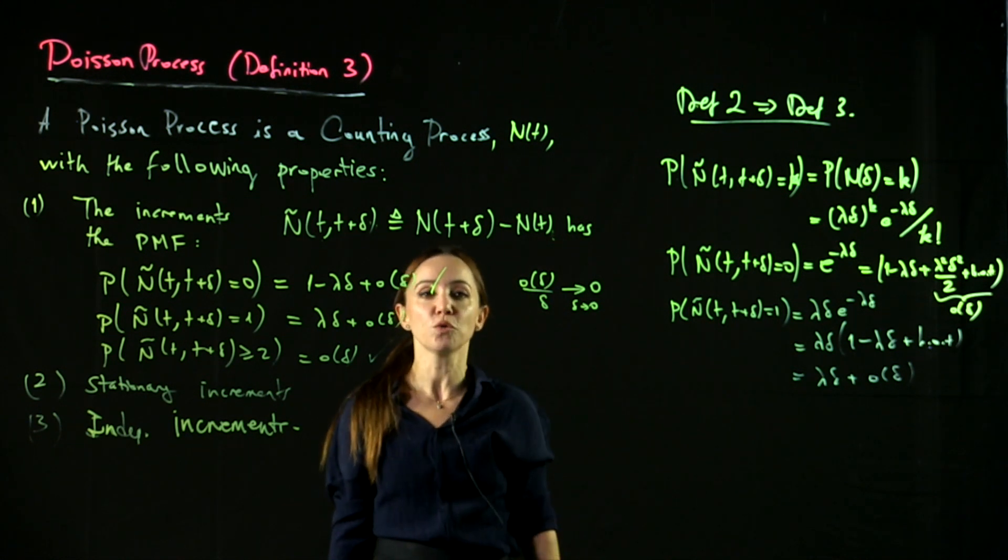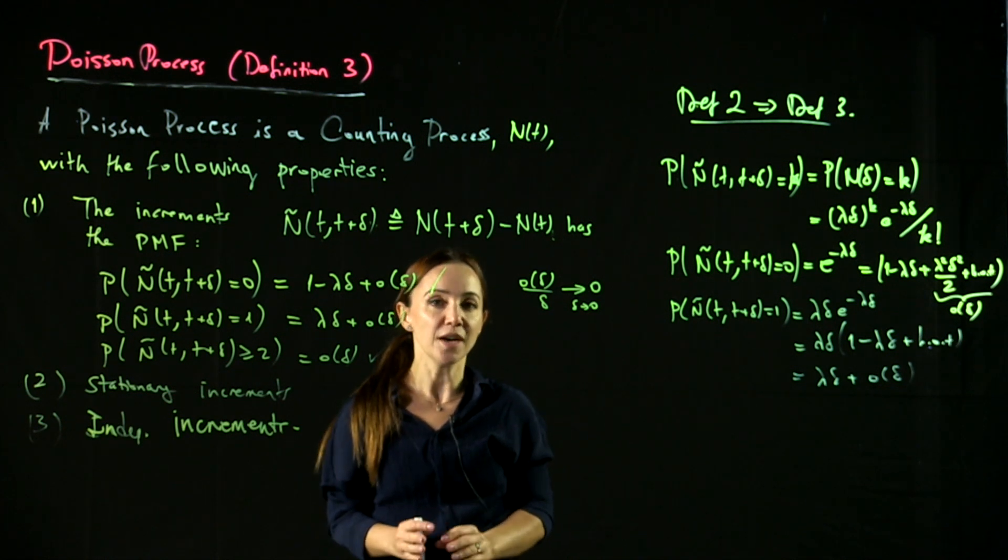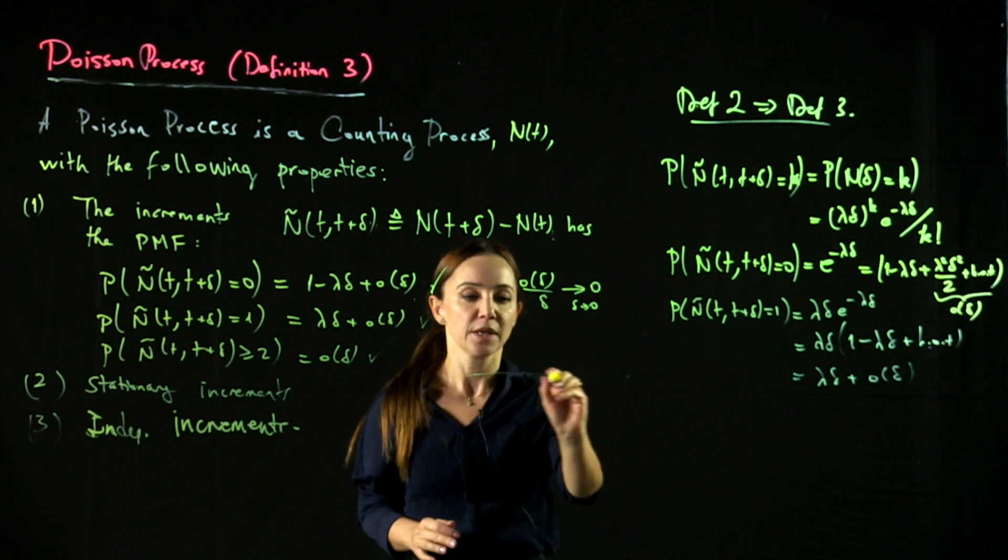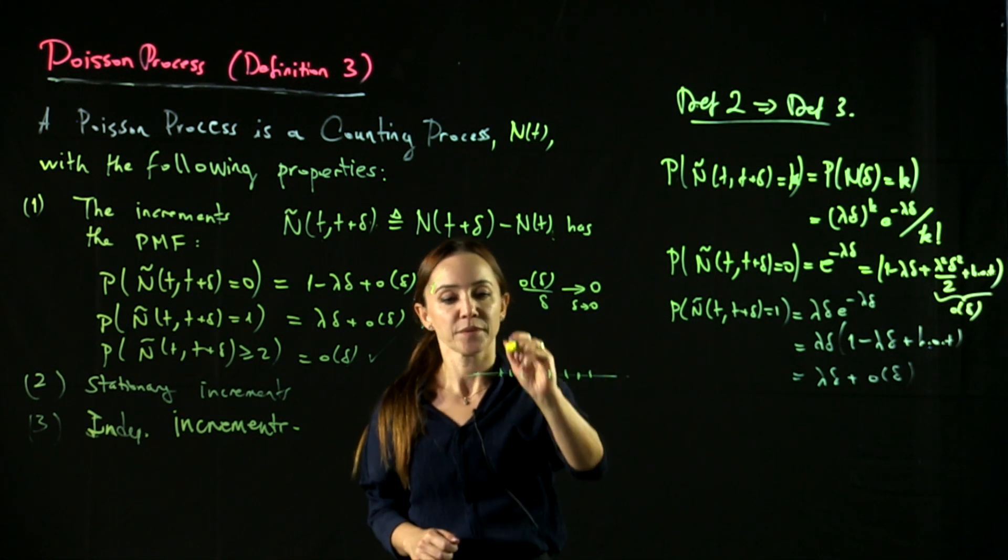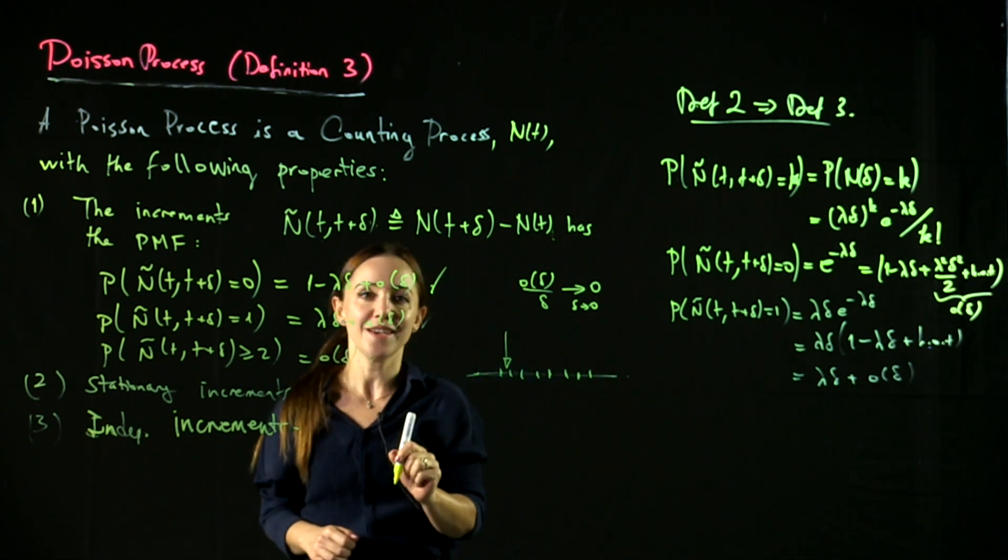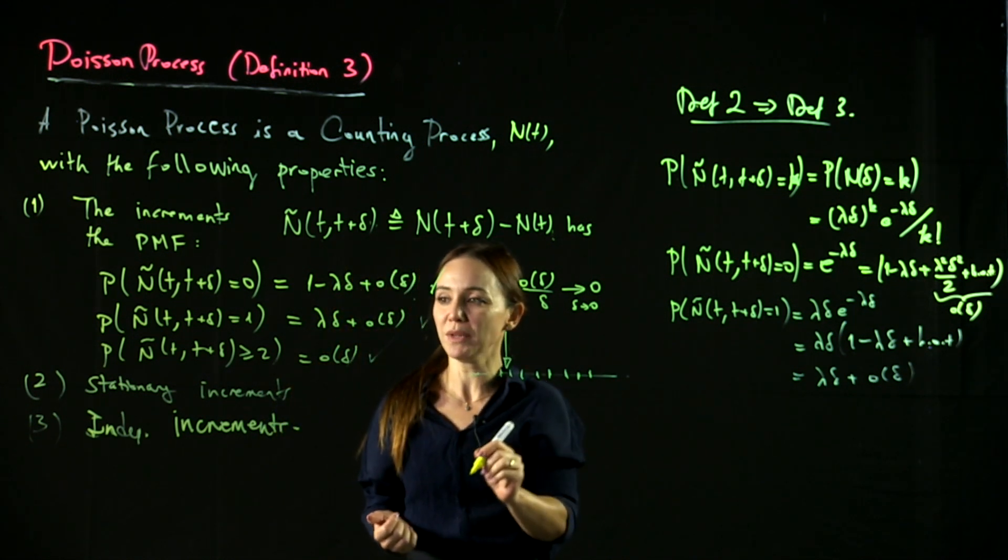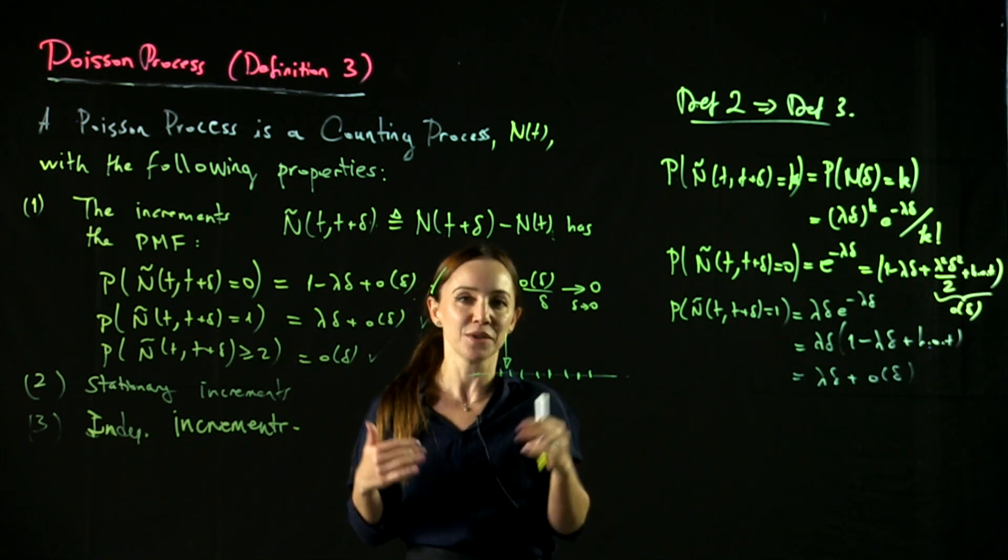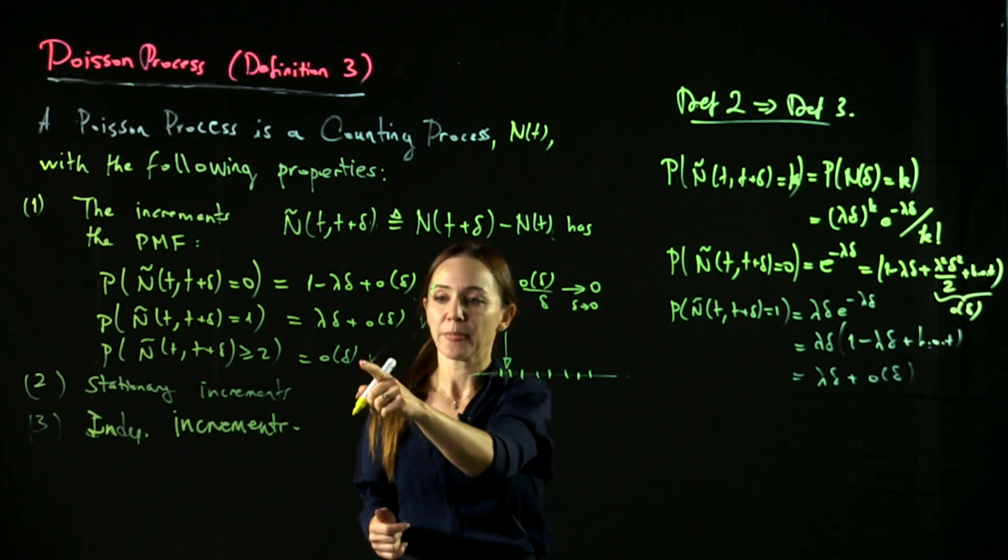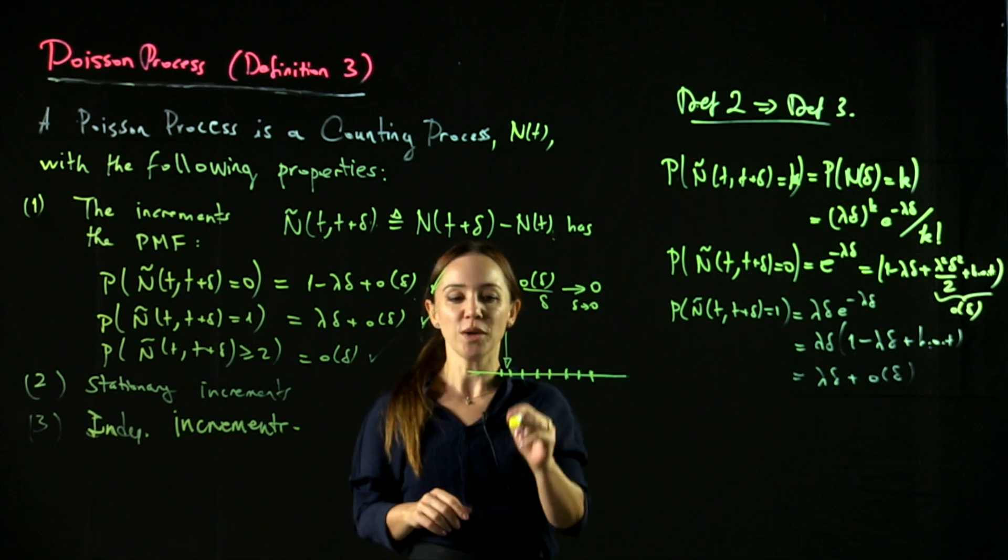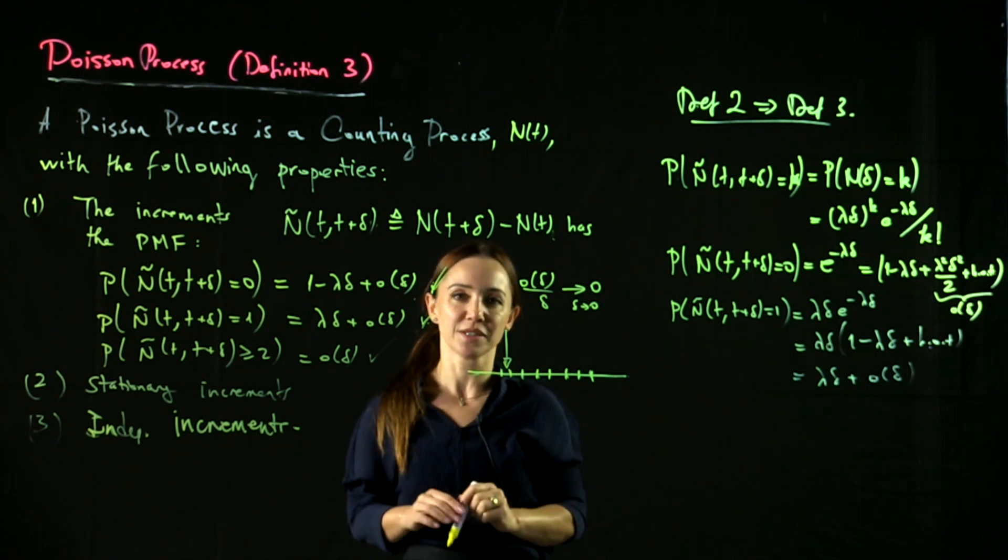So why is this called the baby Bernoulli definition for the Poisson process? Because the idea is if we split time into very small intervals of size delta, in each interval there is at most essentially one arrival. Because the probability that there are more than two arrivals decays very fast with respect to the size of the interval. So if the interval size is chosen small enough, this probability is going to be negligible. So in each interval there is either one arrival or no arrivals.